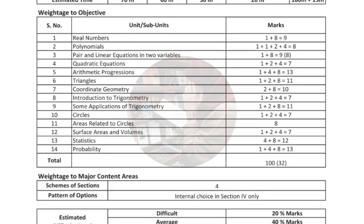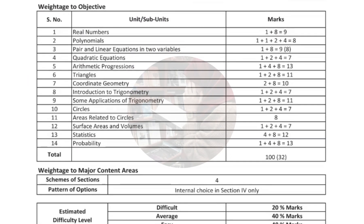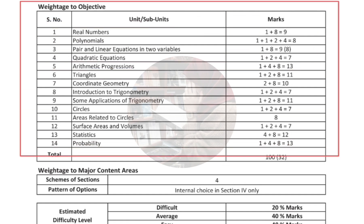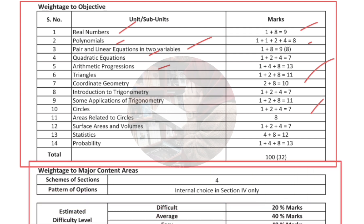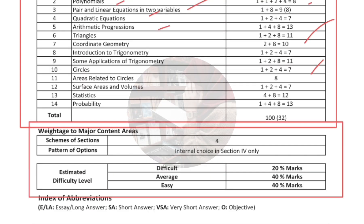The next table is the weightage of objectives, showing the unit names and how many marks will be covered by each unit. Check it out here. The last table is the weightage of minor content area, which represents the estimated difficulty level.